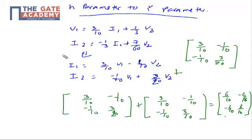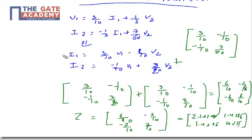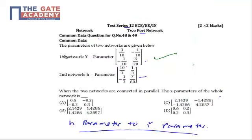Now we need to convert the Y parameter into the Z parameter, because the required answer is the Z parameter. The Z parameter is the inverse of the Y matrix: [6/10, -2/10; -2/10, 3/10], which can be rewritten as approximately 2.1429, 1.4286, 1.4286, and 4.2857. My correct answer is option B. Thank you.